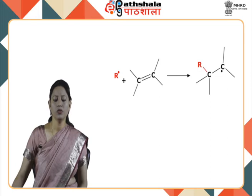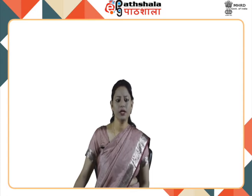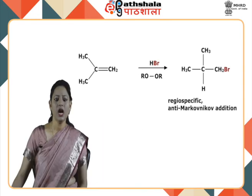Addition to multiple bonds also involves free radical formation. For example, the addition of HBr to alkenes. The anti-Markovnikov addition of HBr to an alkene was probably the first free radical addition reaction to be discovered. Addition of HBr to 2-methylpropene in the presence of a peroxide like ROOR, for example tertiary butyl peroxide or benzoyl peroxide, regiospecifically yields 1-bromo-2-methylpropane, which is the anti-Markovnikov addition product.